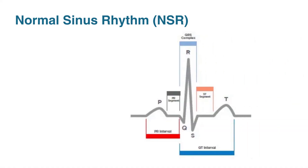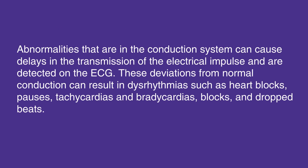The P wave, QRS complex, and T wave together at proper intervals are indicative of normal sinus rhythm, or NSR.